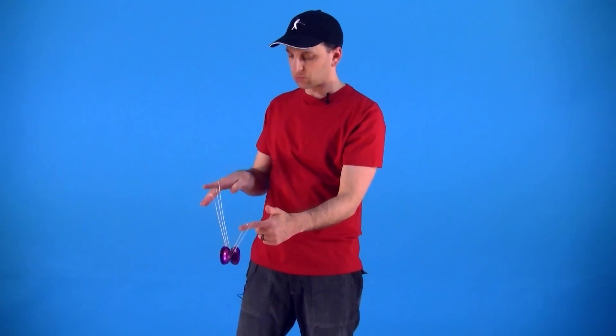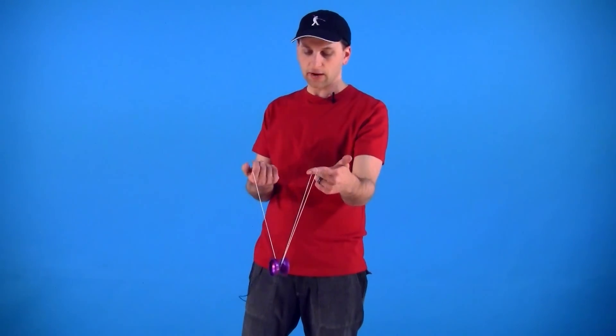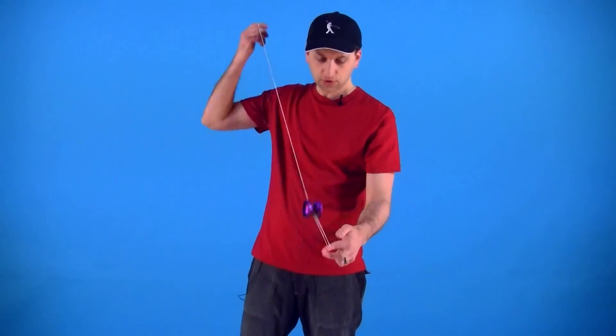To dismount, all you are going to do is roll the yoyo over your yoyo hand, pull your finger out of that string and that gets you back into a trapeze.